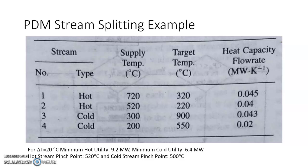Based on PTA at ΔT_min = 20°C, the minimum hot utility requirement is 9.2 MW and minimum cold utility requirement is 6.4 MW. The hot stream pinch point is 520°C and cold stream pinch point is 500°C.